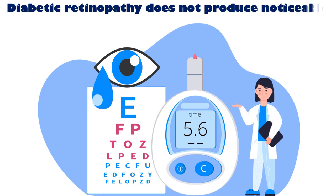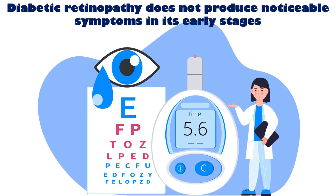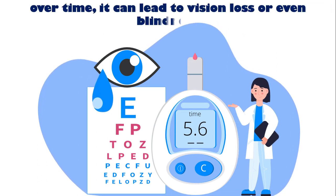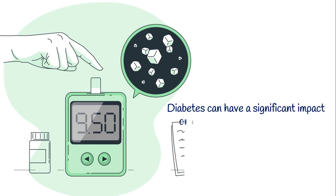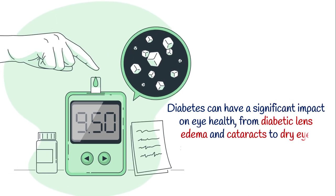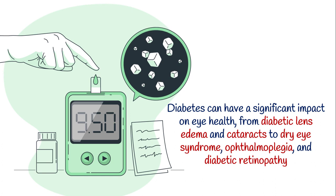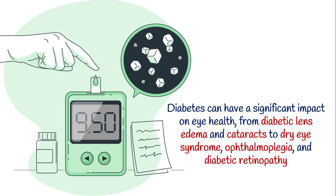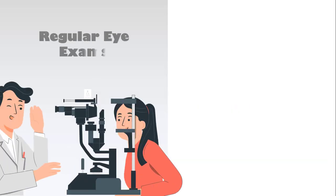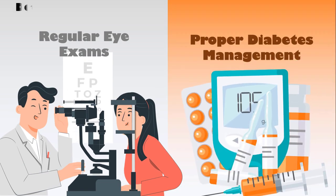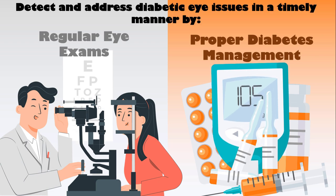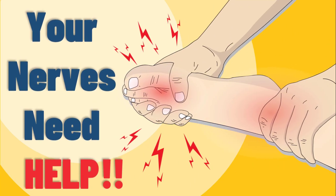Diabetic retinopathy does not produce noticeable symptoms in its early stages, but over time it can lead to vision loss or even blindness. As you can see, diabetes can have a significant impact on eye health, from diabetic lens edema and cataracts to dry eye syndrome, ophthalmoplegia, and diabetic retinopathy. Regular eye examinations, proper diabetes management, and blood sugar control are crucial for detecting and addressing these issues in a timely manner. By the way, to learn more about how diabetes affects nerves and leads to a condition called diabetic neuropathy, watch the next video.